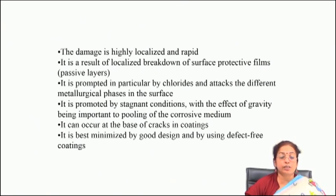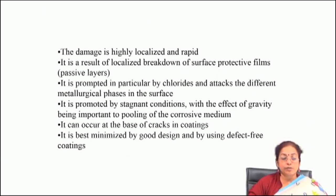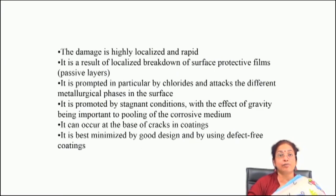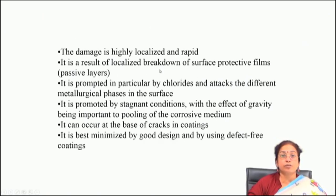Some of the characteristics of pitting corrosion are that it is highly localized and rapid in nature — particularly the propagation rate is very rapid. Pitting corrosion proceeds in two stages: pit initiation and pit propagation. Pit initiation usually occurs at sites of stress concentration or where there is local breakdown of the passive film in the presence of a chloride-containing environment. That particular site acts as a site for pit formation; as soon as there is pit formation there is galvanic cell formation and subsequently propagation of the pit occurs. This is highly localized and rapid, and it is a result of localized breakdown of the surface protective film.